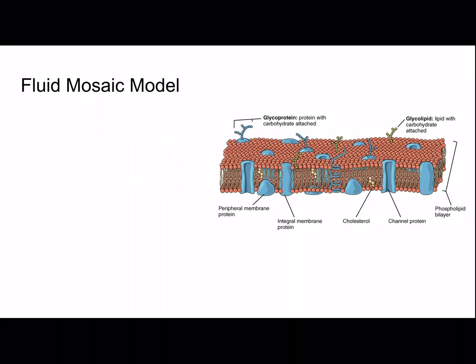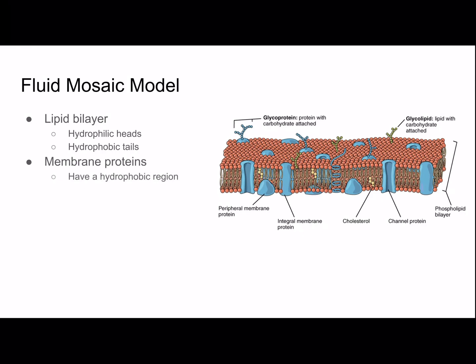The fluid mosaic model is the commonly accepted model for the structure of the plasma membrane. It has a lipid bilayer made of hydrophilic heads which are opposite each other and hydrophobic tails which touch each other. Membrane proteins have a hydrophobic region within the inside of the bilayer and hydrophilic ends on the outside of the membrane.